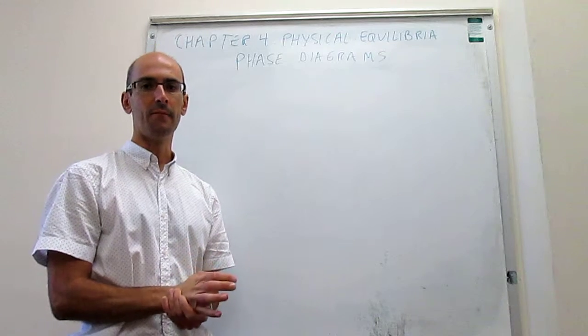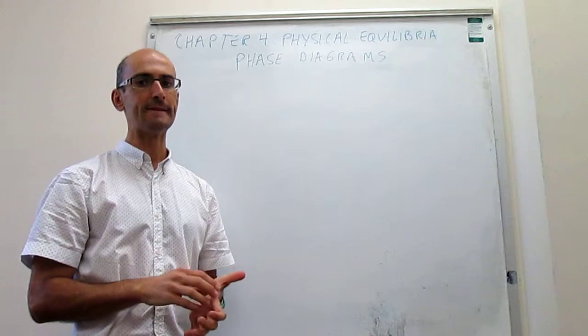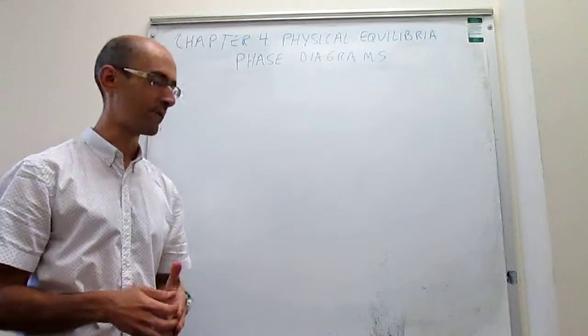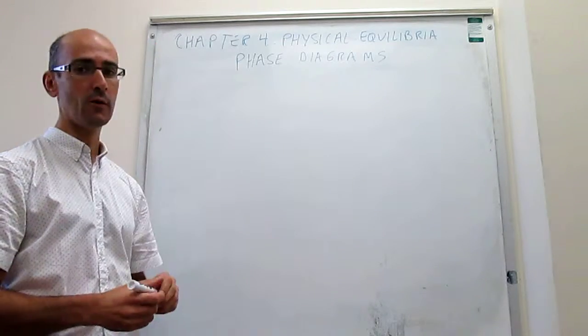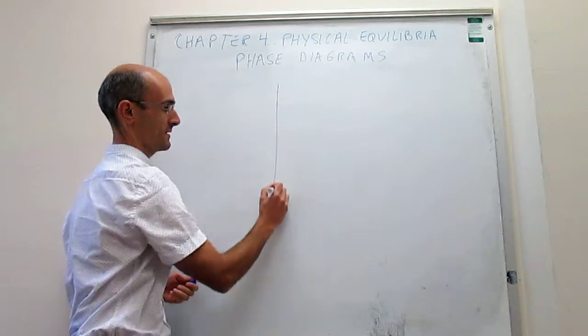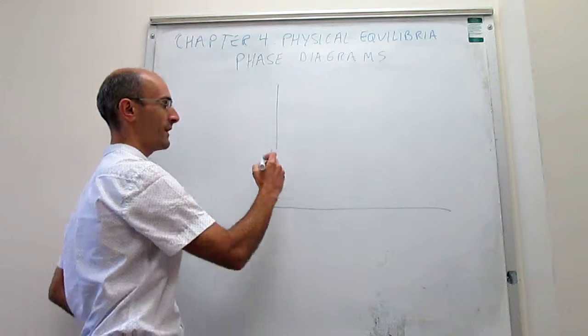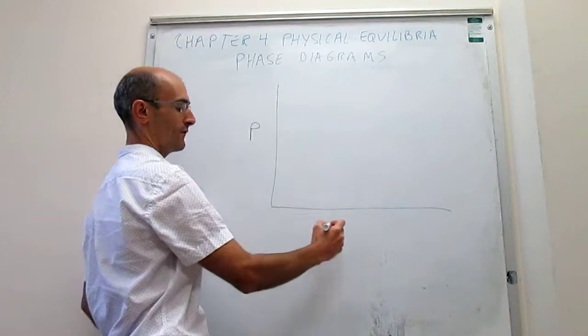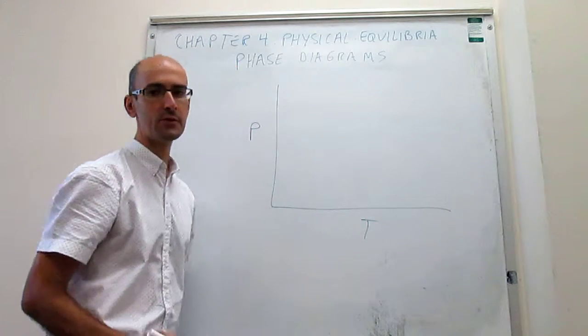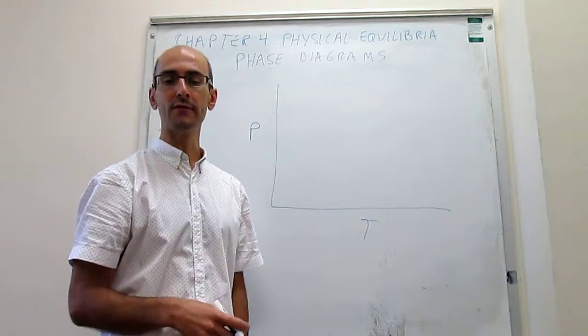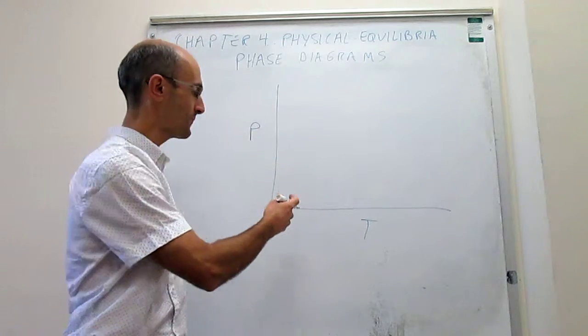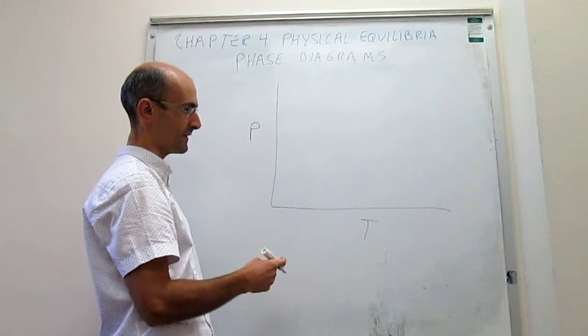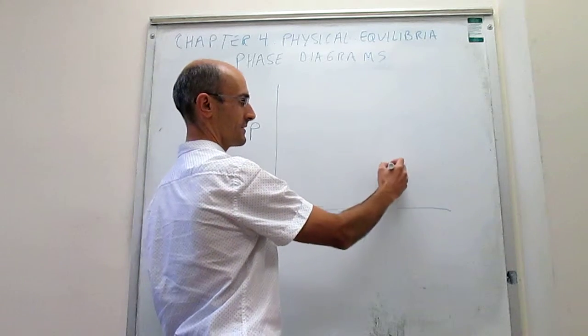This video explains the critical point and the triple point in phase diagrams. We're seeing what a phase diagram is. A phase diagram is just a map of pressure versus temperature in which the most stable phase of a substance is plotted.